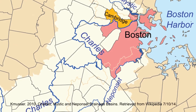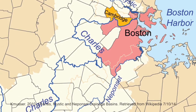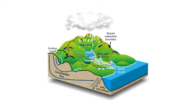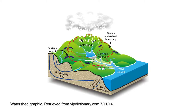These rivers, as well as all rivers, are a part of what is known as a watershed. A watershed is defined as the area of land where all the water that is under it or drains off of it goes into the same place. Everyone lives in one watershed or another, and they come in all shapes, sizes, and cross country, state, and national boundaries.